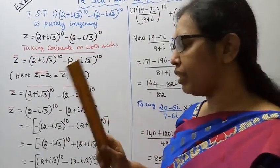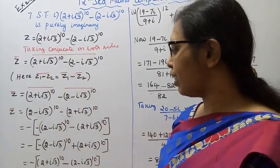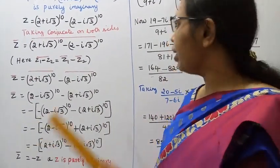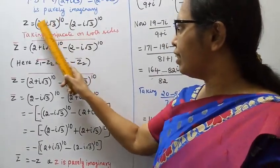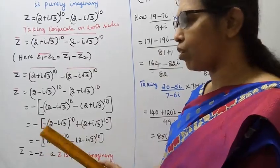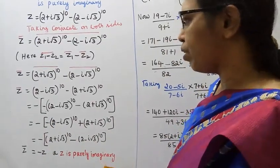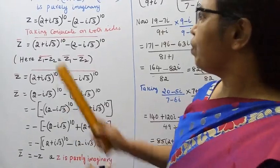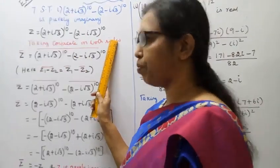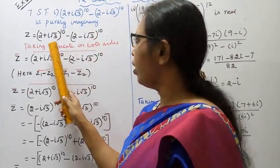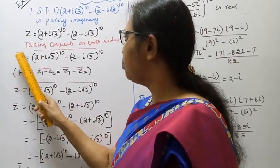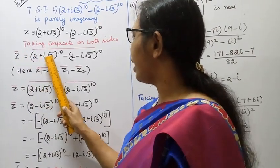To prove z is purely imaginary, the condition is z̄ = −z. If z̄ = −z, then z is purely imaginary. So we need to show that z̄ = −z. So z̄ = (2 + i√3)^10 − (2 − i√3)^10.